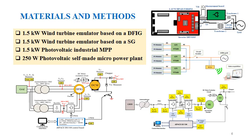Materials and Methods. Experimental prototypes of smart micropower plants are developed at the Laboratoire d'Automatique de Tlemcen. The first one is a 1.5 kW wind turbine emulator based on a doubly-fed induction generator (DFIG). As shown in the figure, the DC motor is directly coupled to the DFIG and is powered by a chopper. The chopper is powered from the same DC bus as the machine side converter, so we need only a simple three-phase diode-based rectifier.